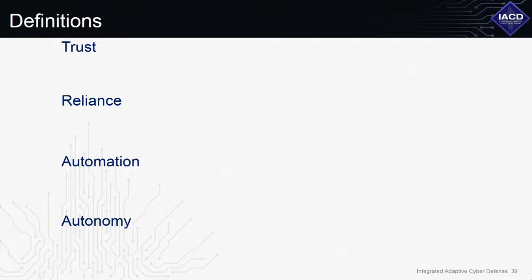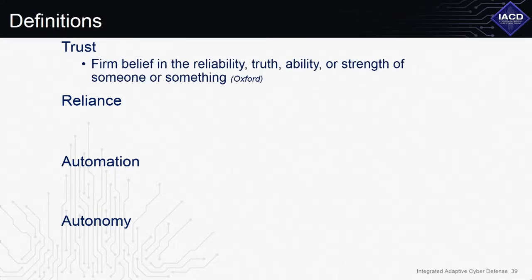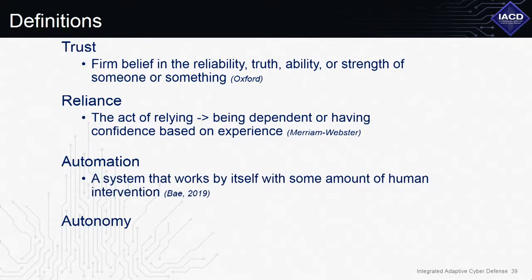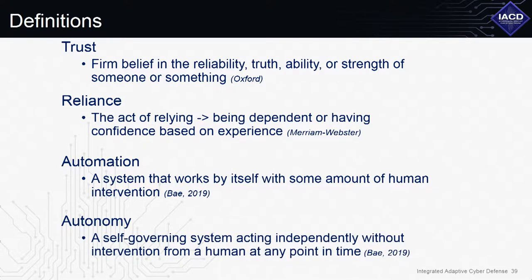A little housekeeping before we begin. To effectively have a conversation, we wanted to define some things: trust, reliance, automation, and autonomy. Trust is the firm belief in the reliability and truth of someone or something. Reliance is being dependent on or having confidence based on some experience. Automation is a system working by itself or with some amount of human intervention. Autonomy is a system acting more independently without intervention of a human at any point in time while the system is operating.